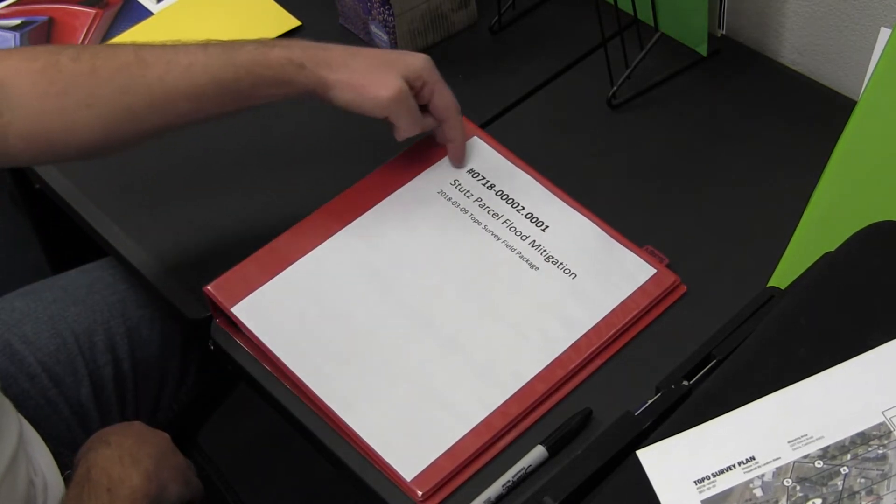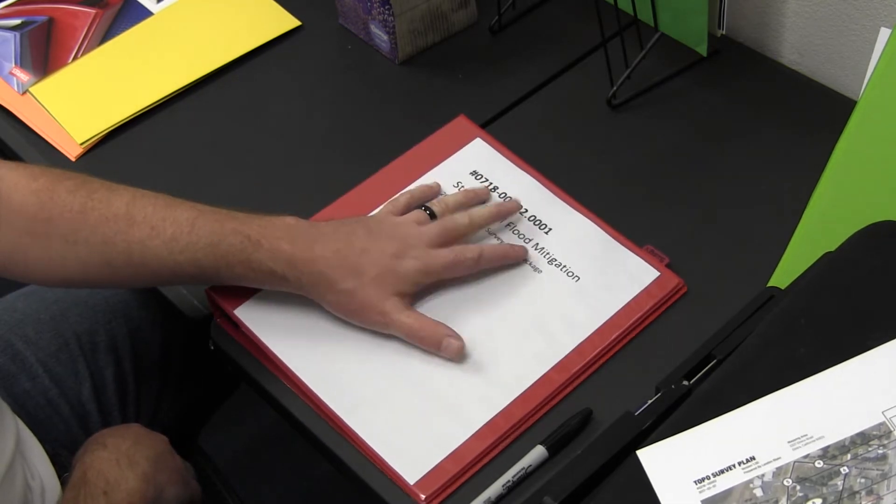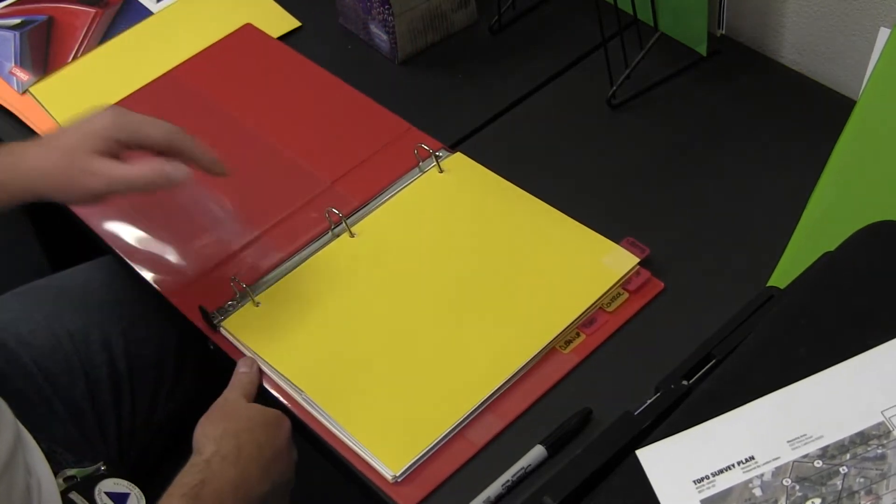In the front cover of the binder, we've got a sheet with the job number and the name of the job, and then the date that the package is put together. That goes here on the cover.